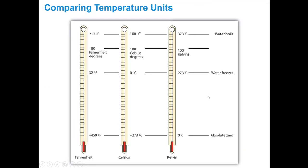Here are thermometer diagrams comparing all three scales at key reference points. The freezing point of water is 32°F, 0°C, and 273 K. Absolute zero is 0 K, which equals −273°C and −459°F. The boiling point of water is 212°F, 100°C, and 373 K. This gives a pictorial way to relate the different temperature scales.